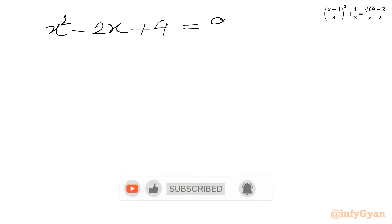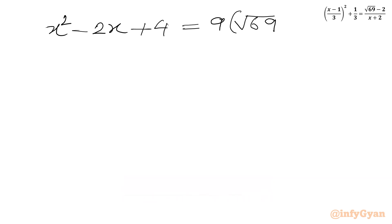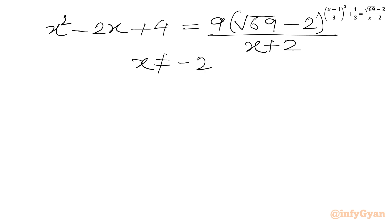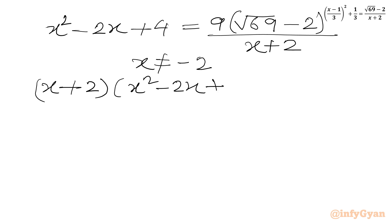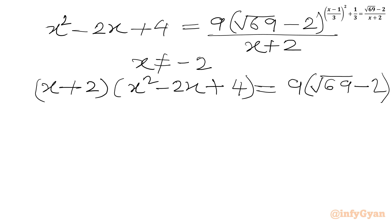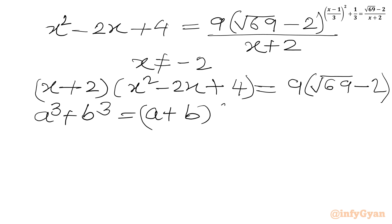Since x is not equal to minus 2, we can cross multiply. So we write (x plus 2)(x² minus 2x plus 4) equal to 9 times the square root of (69 minus 2). Now we recall the formula: a³ plus b³ equals (a plus b)(a² minus ab plus b²).